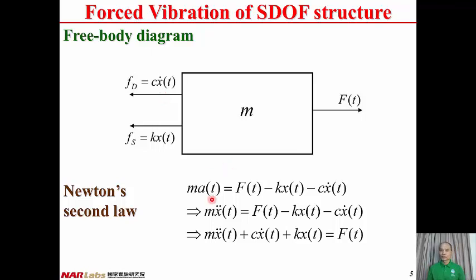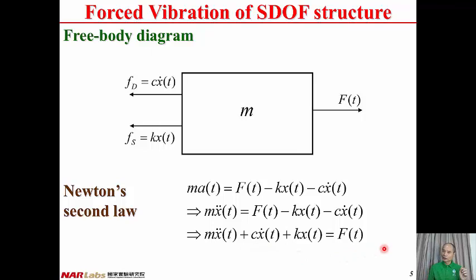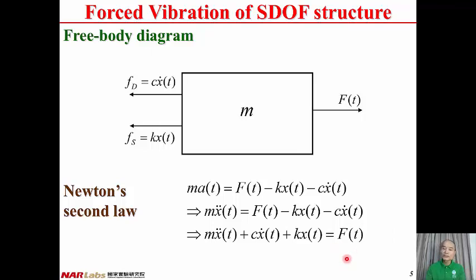A(t) is the acceleration of the structure, expressed as the second derivative of displacement. According to Newton's law, Ma equals the resultant force: F(t) minus Kx(t) minus Cx-dot(t), since restoring and damping forces point left. Therefore we have Mx-double-dot = F(t) − Kx(t) − Cx-dot(t). Rearranging gives the equation of motion: Mx-double-dot + Cx-dot + Kx(t) = F(t). This is a second-order, non-homogeneous ordinary differential equation with constant coefficients M, C, and K, which do not vary with time.